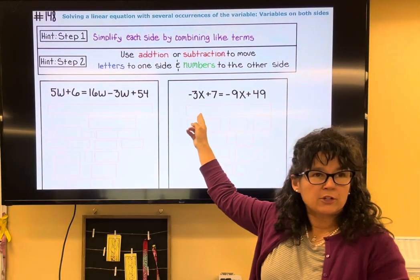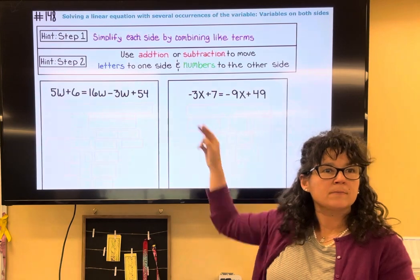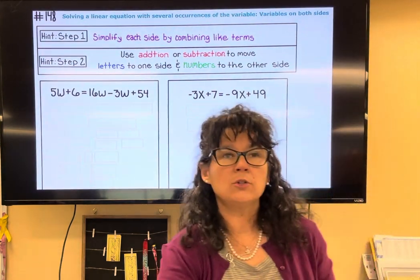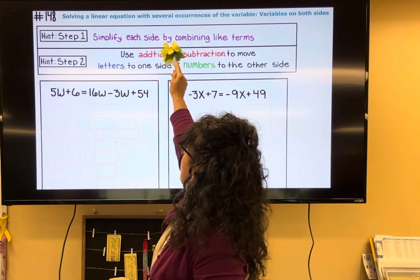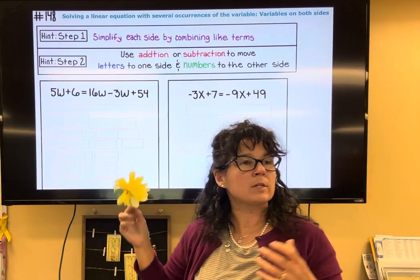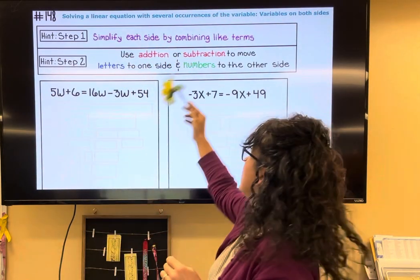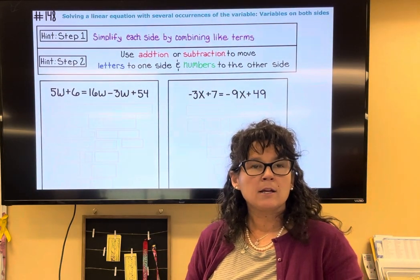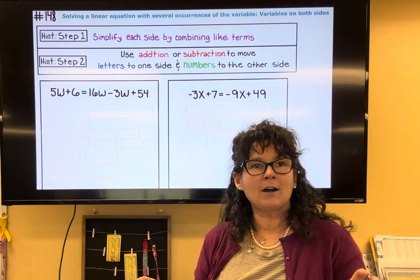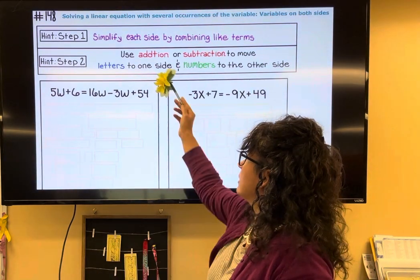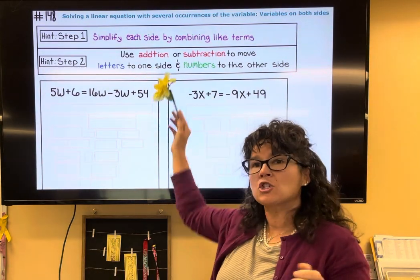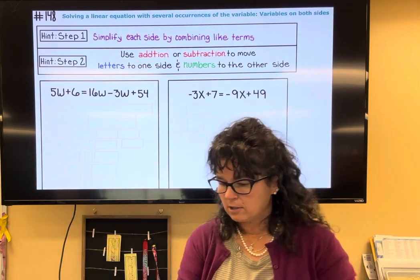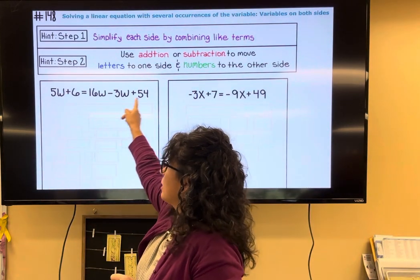We want to solve these two equations. The very first thing we're going to look to do is simplify each side — that means we're going to try to combine any like terms. If the sides are simplified, then we'll move on to using addition and subtraction to move letters to one side and numbers to the other.